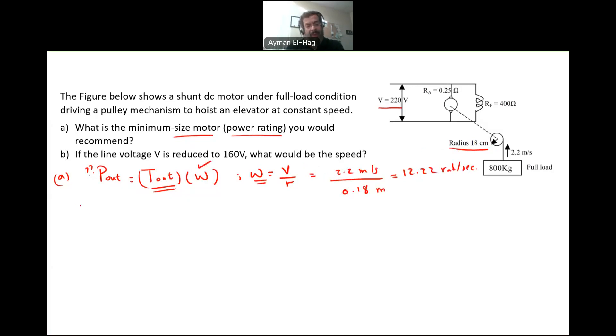Now we need to find the torque. Torque out is equal to the force times the radius. When you have a force times the radius, it will give you the torque. The force basically is the force of the object that you are lifting. So basically, your F is mg, the mass times g, the gravitational constant. So this is equal to 800 times 9.81 times 0.18, which is the radius. This will give me the torque, which is equal to 1412.64 newton meter.